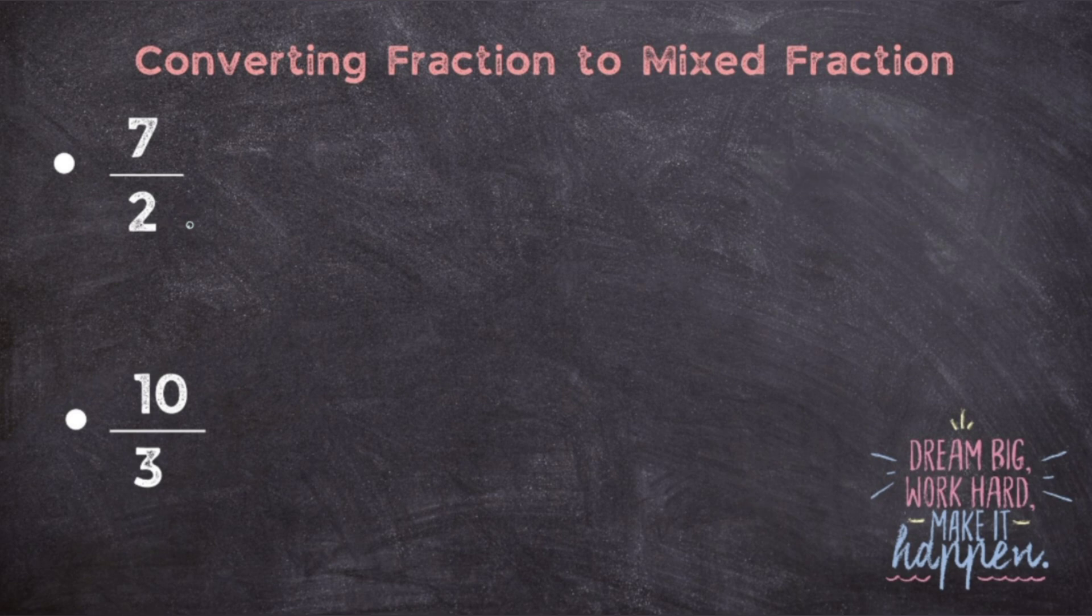So how to find the mixed fraction for it? Simply you just have to divide the given numbers. That means you will just do 7 divided by 2. So how to divide? 2 times 3 is 6, remainder 1.